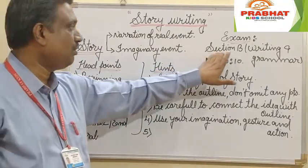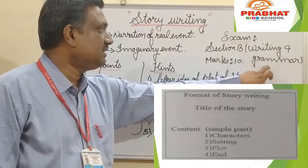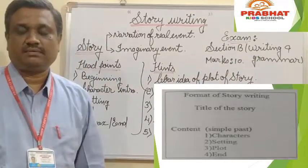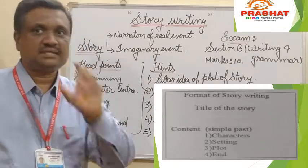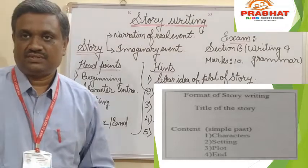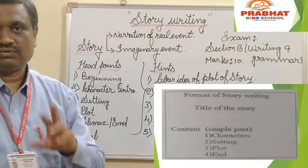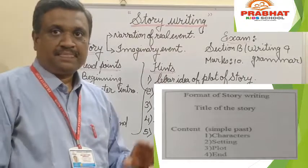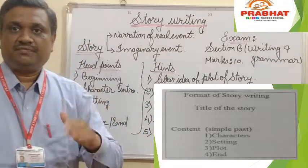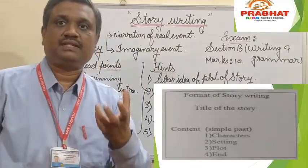From an examination point of view, this topic comes in Section B — Writing and Writing Skills, and a Grammar section. It comprises 10 marks. I will be providing you a photo showing the correct format of story writing: the title, content, character, setting, plot, the end, and the moral of the story. In the next period, a PDF with topics will be provided for you to develop stories.